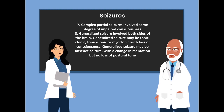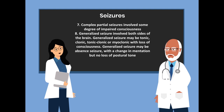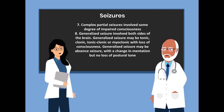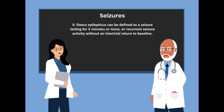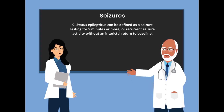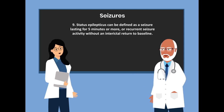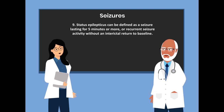Generalized seizures may be tonic, clonic, tonic-clonic, or myoclonic with loss of consciousness. Generalized seizure may also be absence seizure with a change in mentation but no loss of postural tone. The ninth is status epilepticus, which can be defined as a seizure lasting five minutes or more, or recurrent seizure activity without an interictal return to baseline.